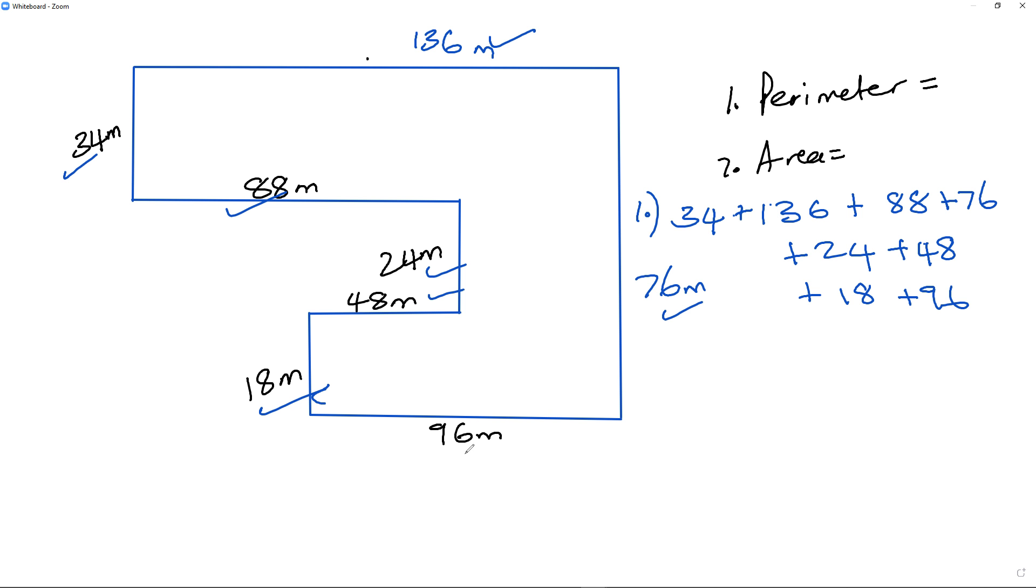Okay, there we go. Definitely added all of them up. Let's see what this total comes to again. I'm going to try it again. So 34 plus 136 plus 88 plus 76 plus 24 plus 48 plus 18 plus 96. That's 520. I've got 520 meters for my perimeter.